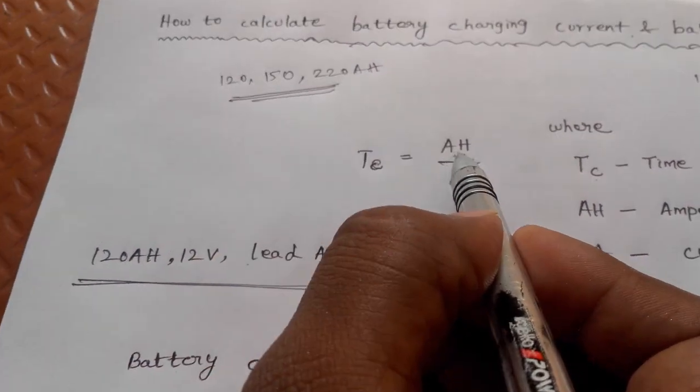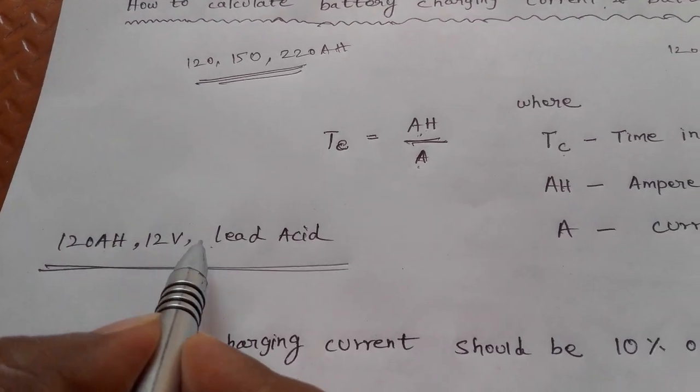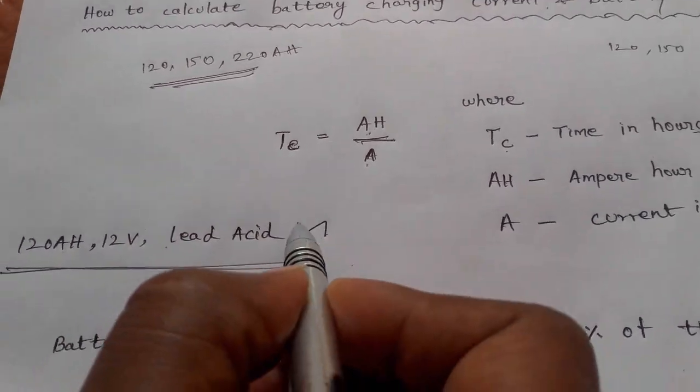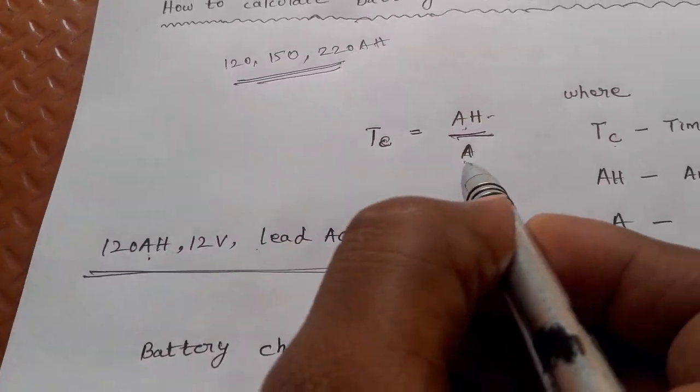For charging current, we consider a 120Ah 12V lead acid battery for this calculation. Now we know the ampere hour is 120Ah, but we don't know the current in amperes yet.